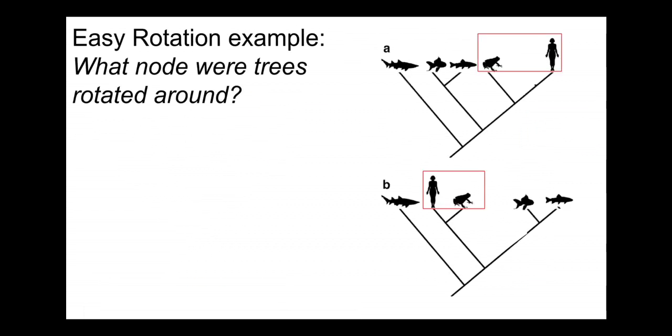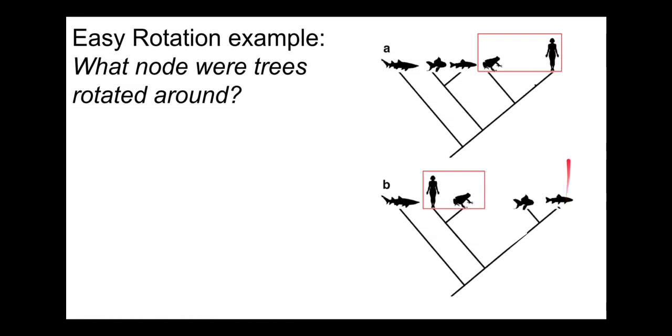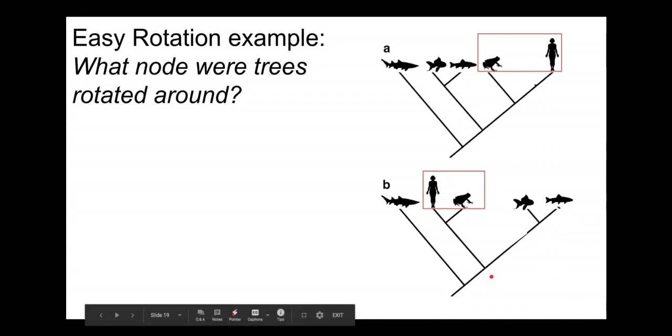Here's another rotation example. Look at this tree up here and then this tree down here. Can you figure out which node or where in the tree a rotation occurred to move from this tree to the next tree? Go ahead and stop the video and think about that for a second. How can you rotate around a node, like a mobile freely spinning, how can you rotate around that node in order to go from A to B?